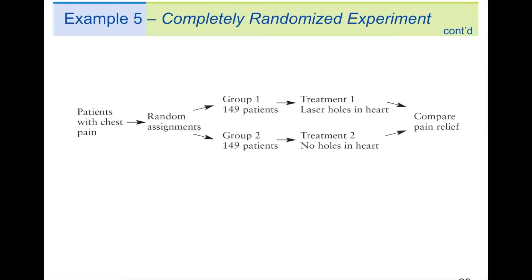Patients with chest pain, and then into random assignments. So, what's happening here is they're splitting the group, group 1 and group 2. Group 1 gets the treatment, the laser holes in the heart. Group 2 gets no laser holes in the heart. And then they compare the pain relief of the two groups.